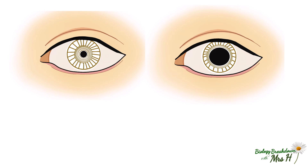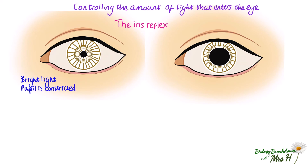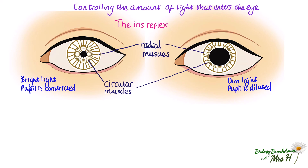Another important function of the eye is the control of the amount of light that enters it. It is the iris that controls how much light enters the eye through the pupil. It's a reflex action, meaning that it doesn't require the involvement of the conscious part of the brain — the reflex is automatic. In bright light, the pupil decreases in size; we say the pupil is constricted. In dim light, the pupil is dilated. It is the circular and radial muscles of the iris that control the size of the pupil.